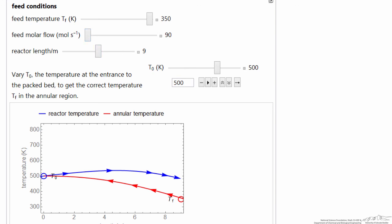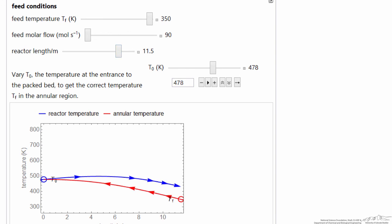At this low flow rate, now we have a solution with a very different T0 value. You can also change the reactor length, and now I can find a T0 that's a solution for this reactor length.